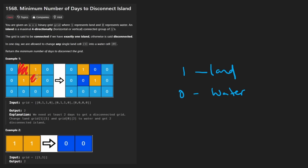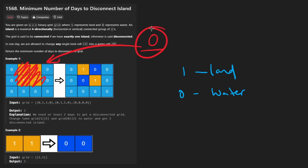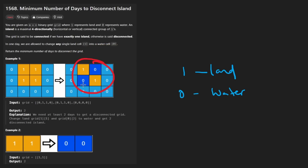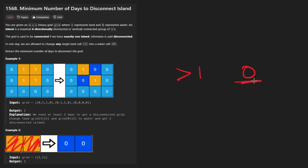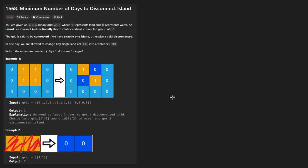We could have removed different pairs of cells and that would also work. If we started with no islands - everything was water - the number of removals would be zero, because zero islands is a base case. The main observation to make to solve this problem is that the answer is always zero, one, or two.